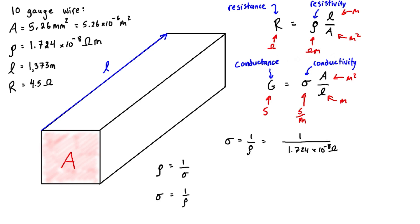This gives us 5.8 times 10 to the 7 Siemens per meter.